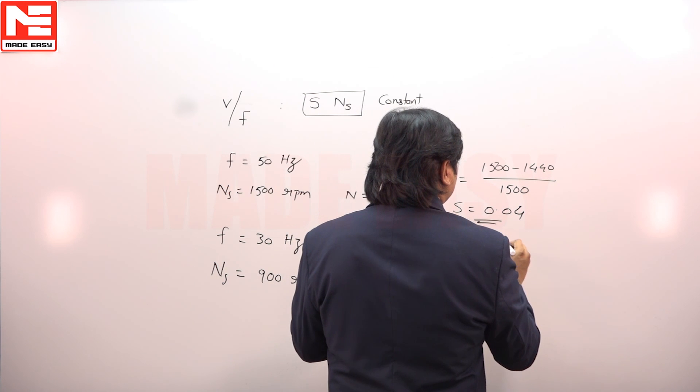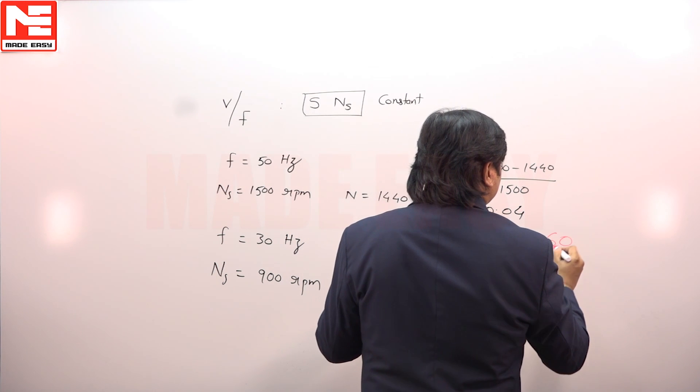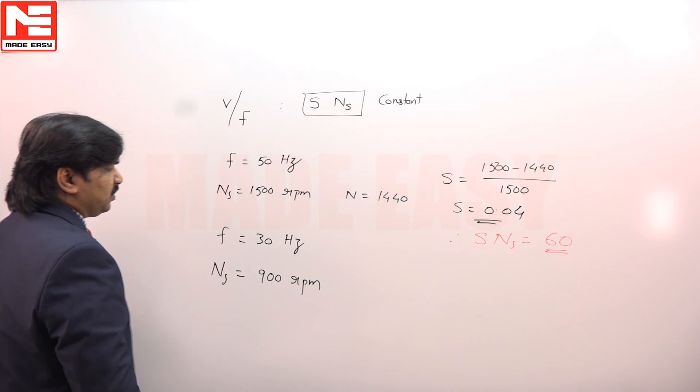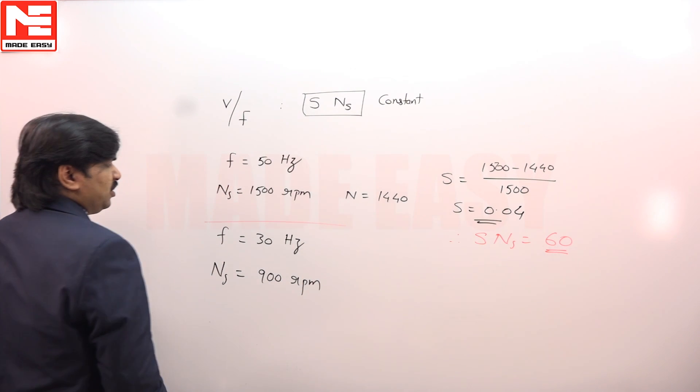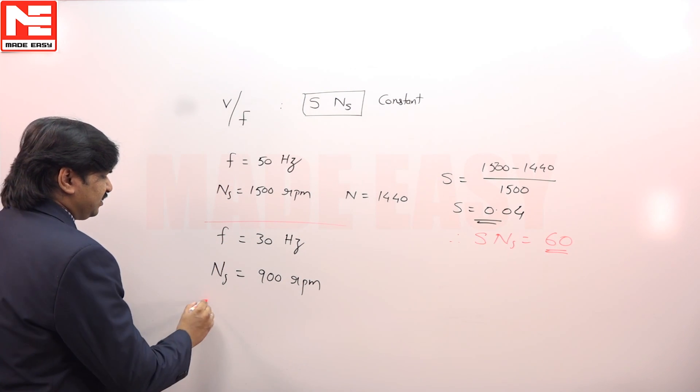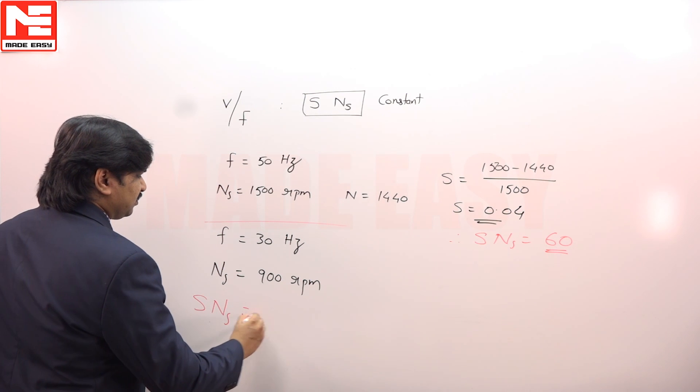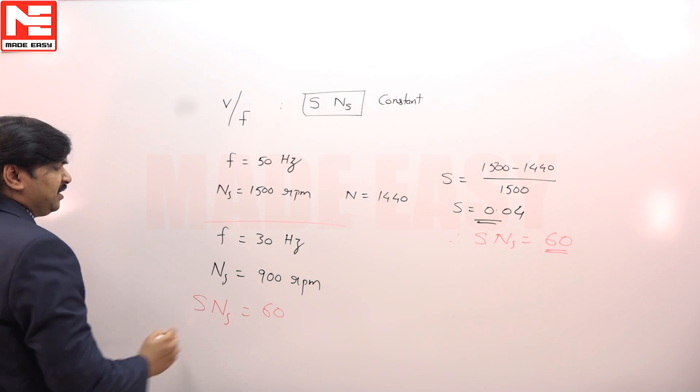Therefore, S × Ns is 60. We have to apply the same technique. Now when you do the speed control, when frequency reduces to 30, S × Ns is 60, Ns is 900.